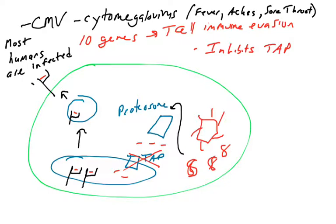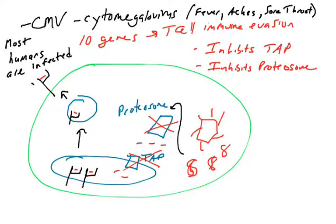For example, CMV makes a protein that inhibits the TAP transporter. If you block the TAP transporter, you're not moving peptides into the ER, peptides won't get loaded, and you won't present those peptides to T-cells — so immune evasion that inhibits TAP will inhibit peptide loading in the ER. CMV also makes a protein that inhibits the proteasome, so that viral proteins are not processed into peptides that can be transported through TAP. Even if the TAP transporter were functional, there would be no peptides to send into the ER to signal the infection.